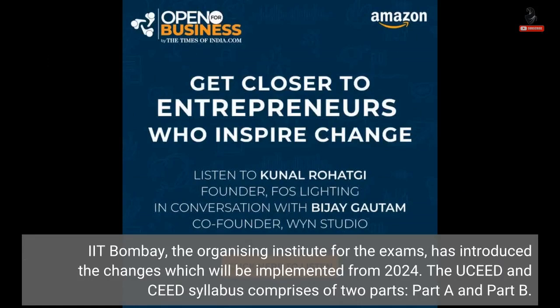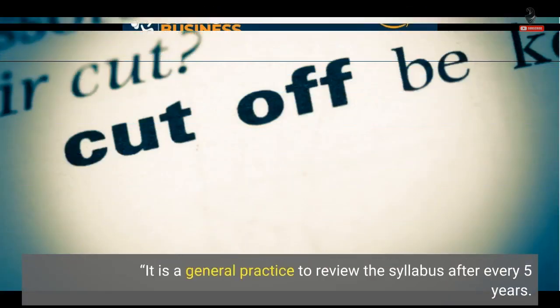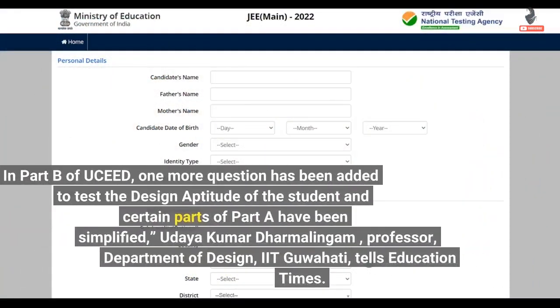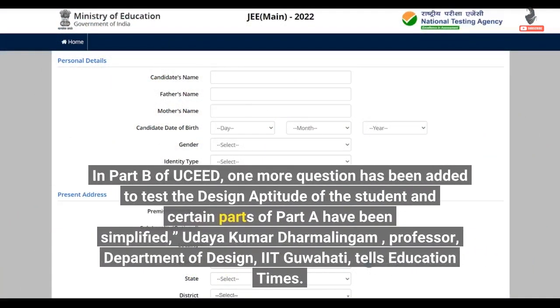The UCEED and CEED syllabus comprises two parts: Part A and Part B. It is a general practice to review the syllabus after every five years. In Part B of UCEED, one more question has been added to test the design aptitude of the student, and certain parts of Part A have been simplified.